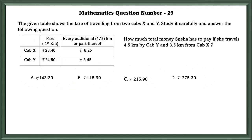Mathematics question number 29. The given table shows the fare of travelling from two cabs, X and Y. Study it carefully and answer the following questions. How much total money does she need to pay if she travels 4.5 km by cab Y and 3.5 km by cab X?